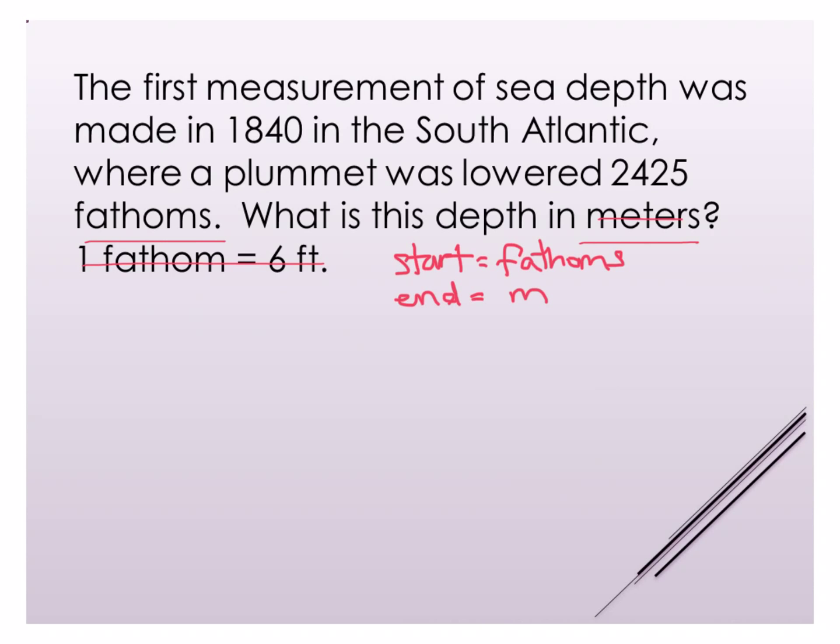And so now what I want to do is make a list of things that I might need to know. Now it's given us this one relationship one fathom equals six feet but also realize that I've got to get somehow from feet to meters so I want to think of any conversion factors that might help me get between feet and meters. And so I know that one foot equals 12 inches and one inch equals 2.54 centimeters and 100 centimeters equals one meter.